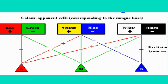The second theory is the opponent process theory. Rather than having one cone that's red, one that's green, and one that's blue, this theory believes we have opposing cones. One cone is for reds and greens, one cone is for yellows and blues, and one cone is for whites and blacks. Those cones will fire either red or green, either yellow or blue, or either white or black, but they won't fire both of those colors at the same time. You should write down those opposing pairs: red-green, yellow-blue, and white-black opponents.